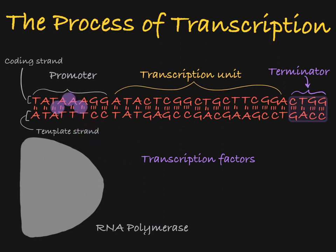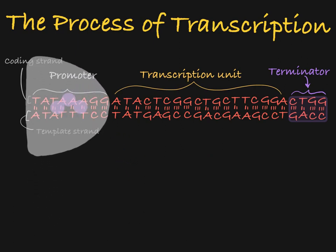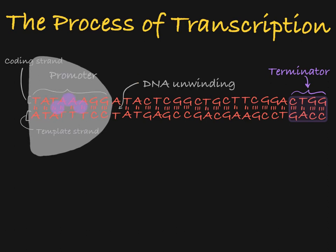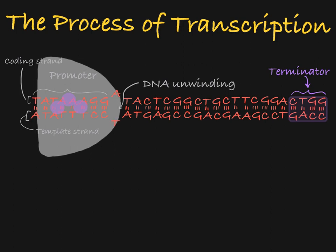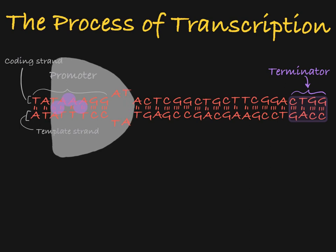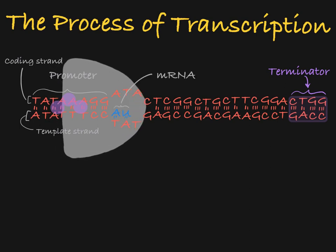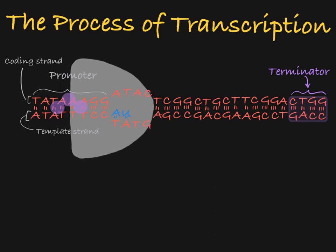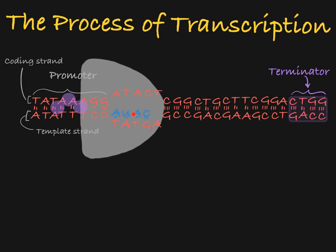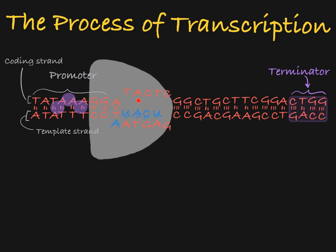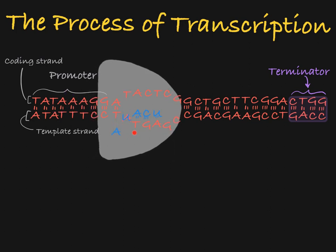Once the RNA polymerase has bound to the promoter region of the gene, transcription can start. The RNA polymerase will unwind the DNA, creating a transcription bubble. The RNA polymerase will use RNA nucleotides to build a strand of mRNA complementary to the template strand in the transcription bubble. Notice that when DNA contains adenine, the complementary RNA nucleotide is uracil, and when DNA contains thymine, the complementary RNA nucleotide is adenine.